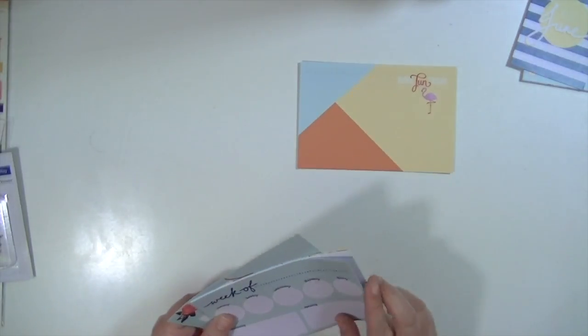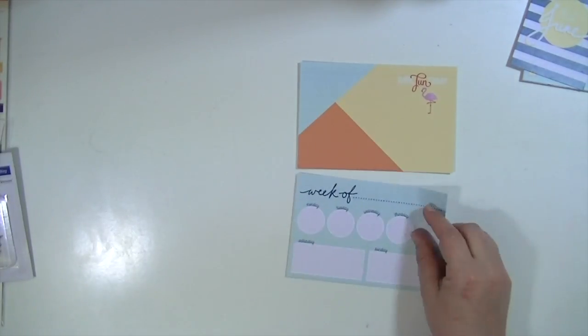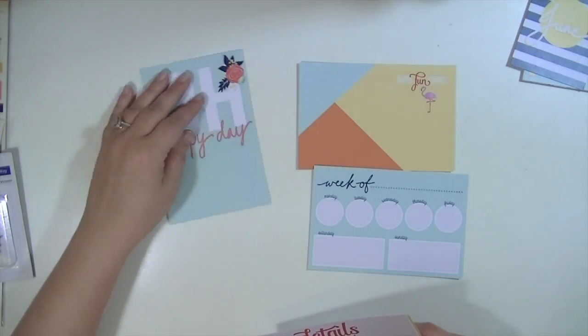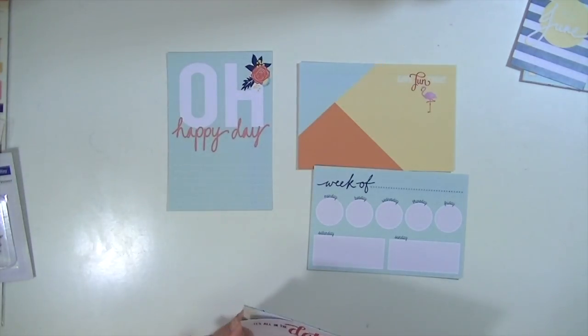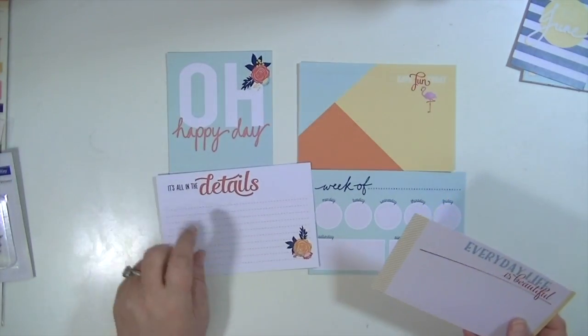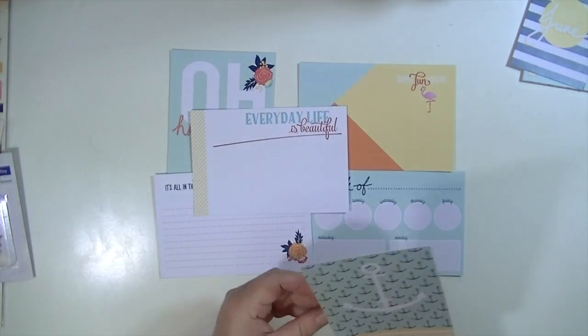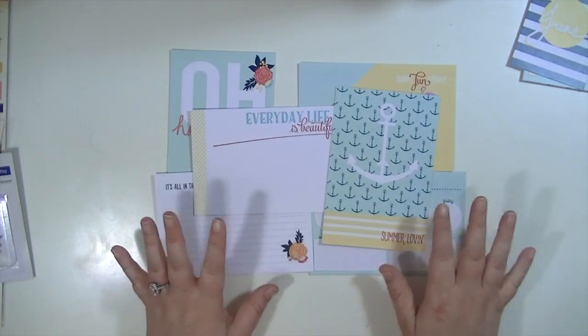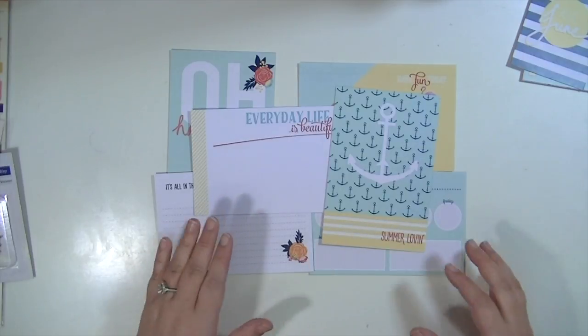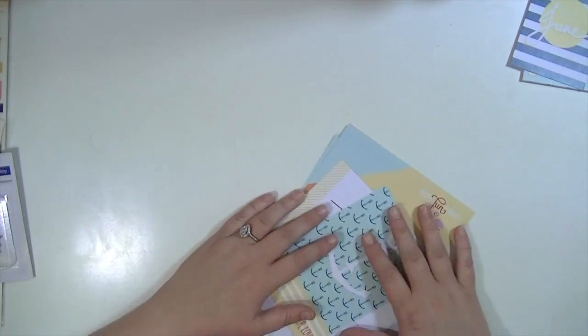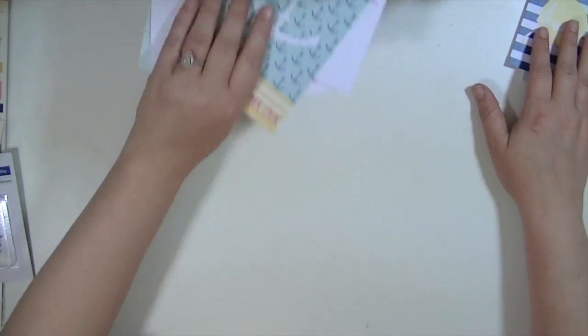We have a fun little flamingo. These are the four by six cards. The Week Of, this one says Oh Happy Day with a Pretty Floral. It's all in the details. Everyday Life Is Beautiful and Summer Love It. I like that there's a mix of vertical and horizontal cards. So those are your four by six cards.